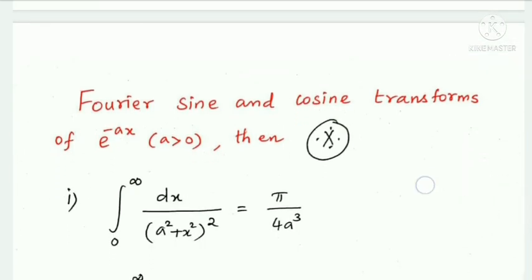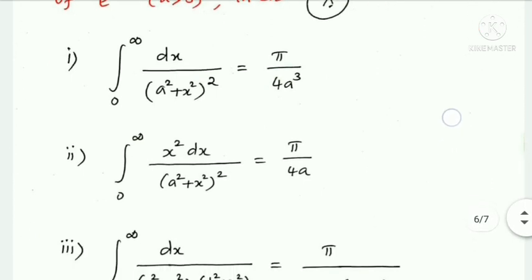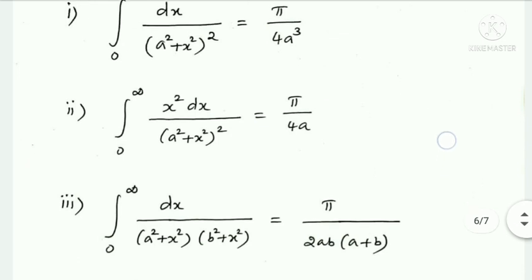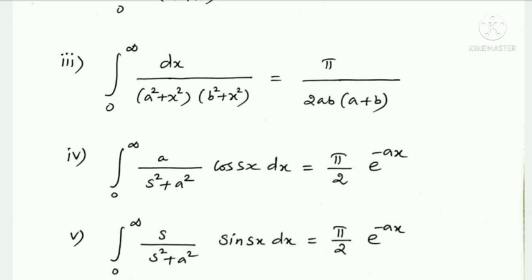Next important results for Fourier sine and cosine transforms of e^(−ax) where a > 0. Result 1: integral from 0 to ∞ of dx/(a²+x²)² equals √π/(4a³). Result 2: integral from 0 to ∞ of x²·dx/(a²+x²)² equals π/(4a). Result 3: integral from 0 to ∞ of dx/[(a²+x²)(b²+x²)] equals π/[2ab(a+b)].